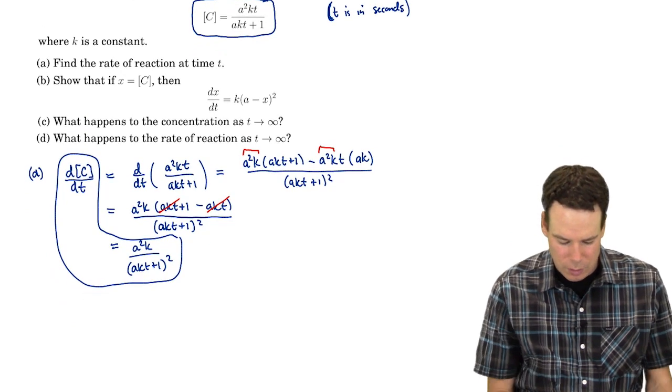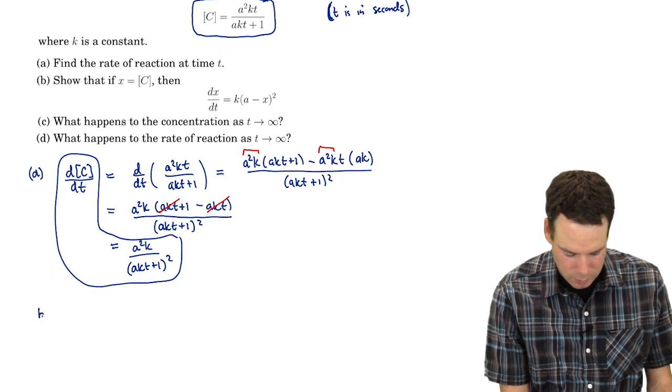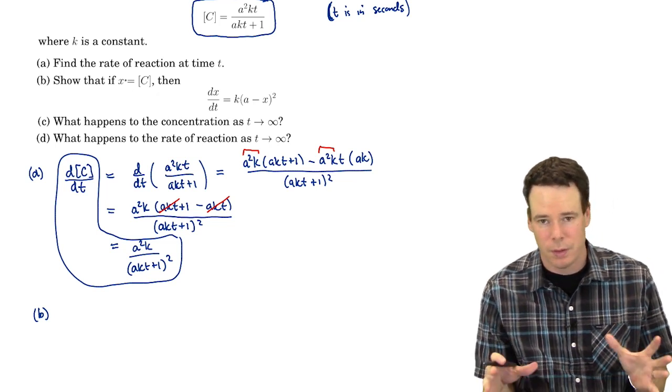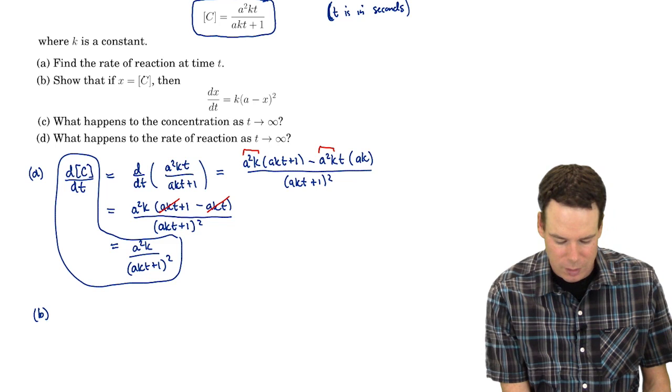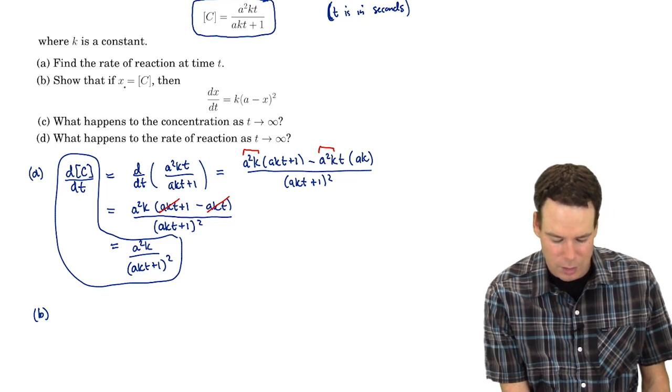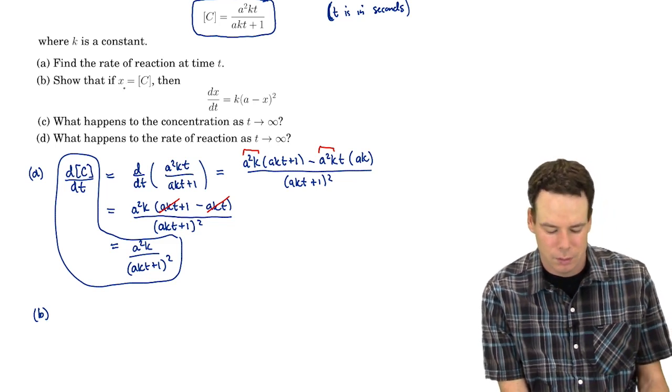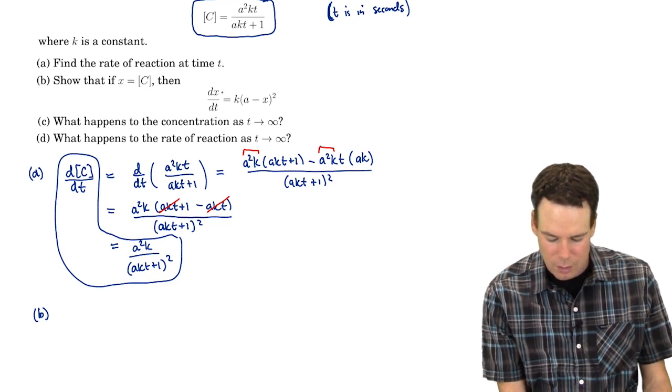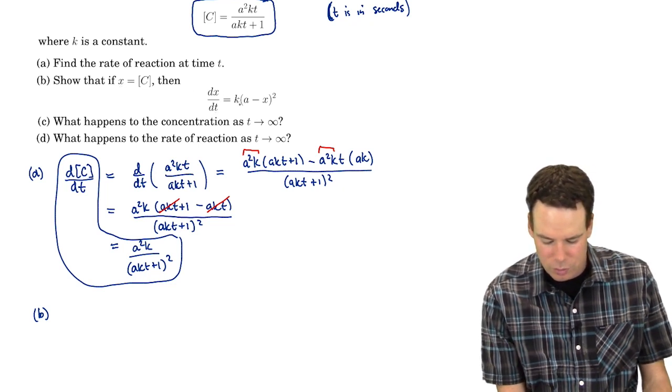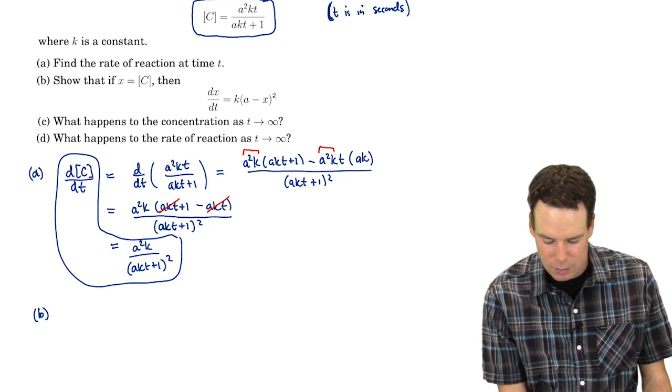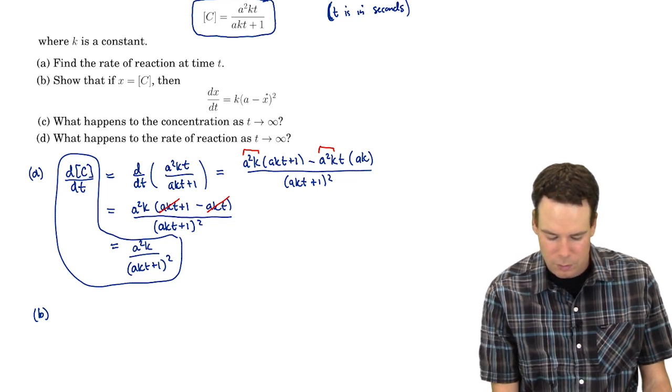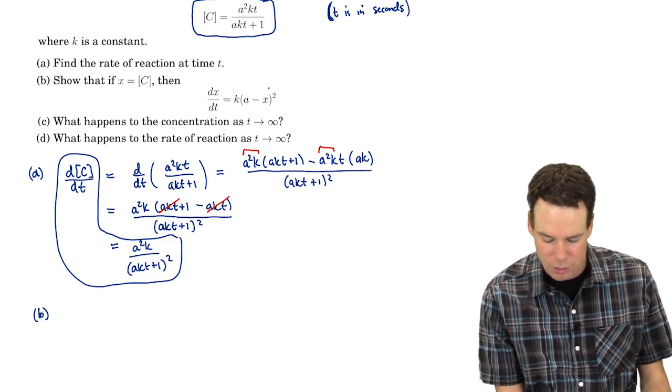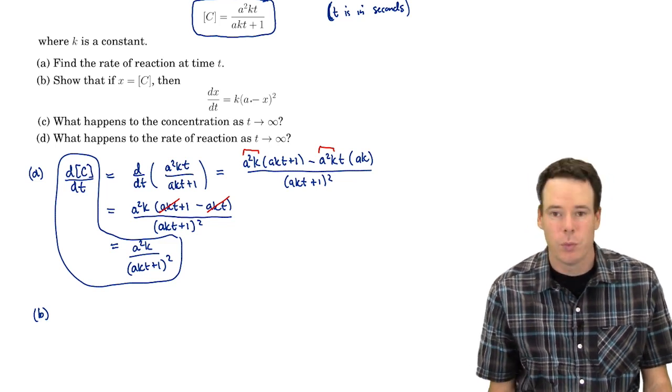What does the next question ask? It says, show that if x is the concentration of C. So in other words, just simplifying the variable, instead of using square bracket capital C all the time, we can just replace it with little x. So show that if x is the concentration of C, then the derivative of x is equal to k times a minus x all squared. So it's saying that the derivative or the rate of reaction is related to the concentration by this formula.